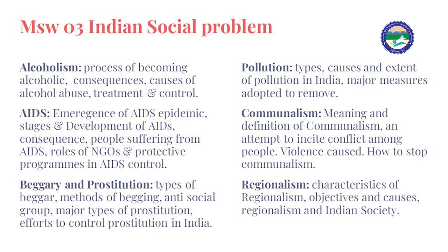The ninth topic is beggary and prostitution — types of beggars, methods of begging, anti-social groups, major types of prostitution, and efforts to control both prostitution and beggary in India. The tenth topic is pollution — its types, causes, extent in India, and major measures adopted. The eleventh topic is communalism — its social impact, causes of conflict and violence, and how to stop it. The twelfth topic is regionalism — its objectives, causes, and impact in India.